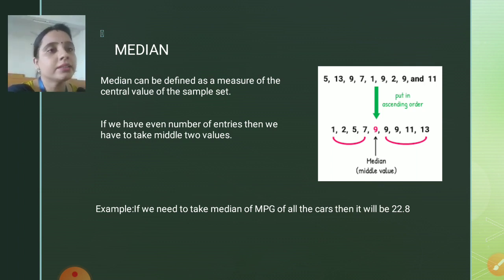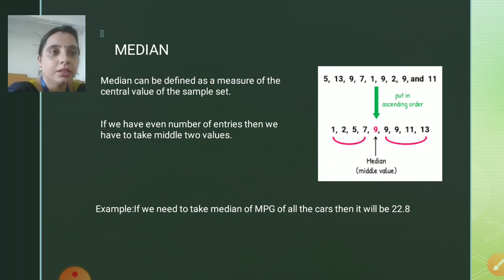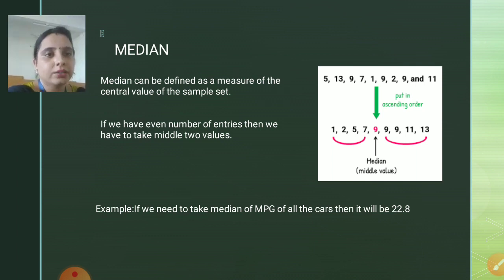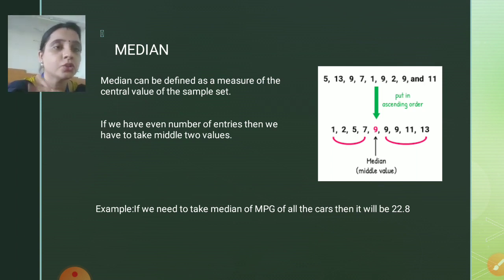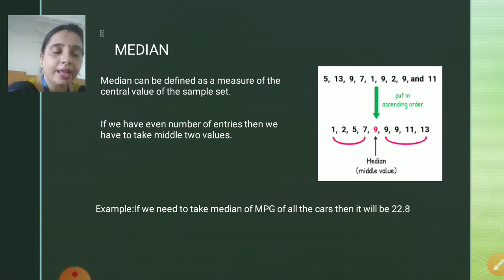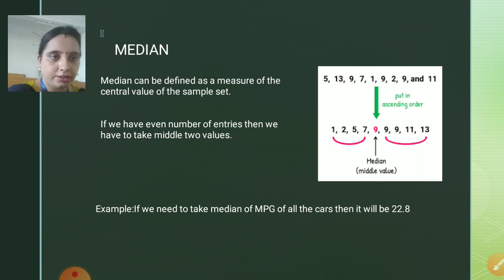This is an example where the dataset has an odd number of values, so it is easy to find the middle value. What if the dataset has an even number of values, like eight or ten elements? In that case, we need to take two middle values. For example, if I add 14 to the list, the two middle values will be 9 and 9, so the median will be (9 plus 9) divided by 2, which is 9.